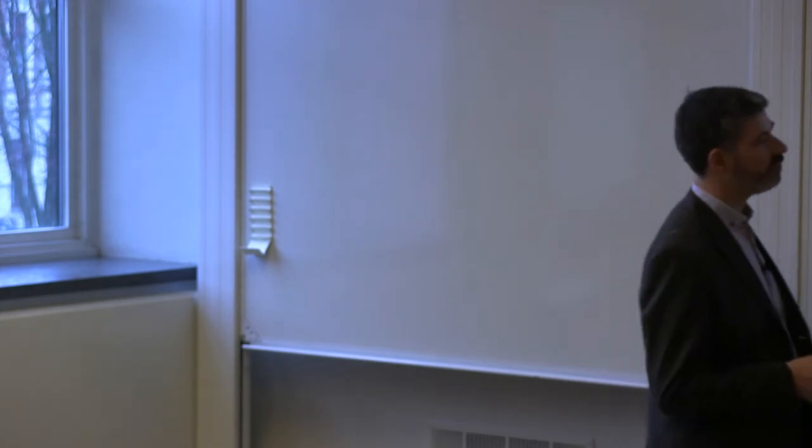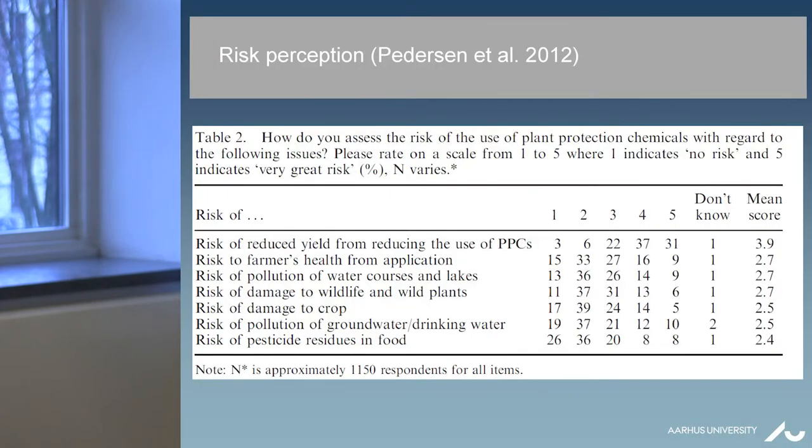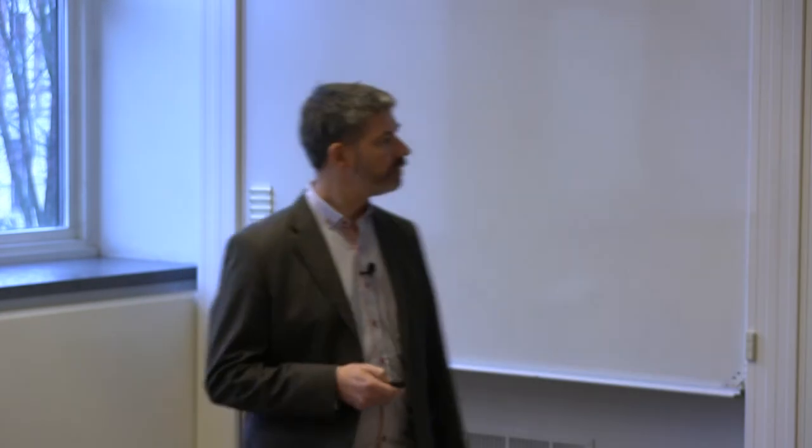Second, almost all other types of risk are pretty close to each other. So we see scores between 2.5 and 2.7. So it's very close to the mean of the scale at 3, of course. But we also see that there's quite a lot of division here between the farmers. So it's quite a lot spread all over the scale. So there's some variation between the farmers and how they assess the risk.